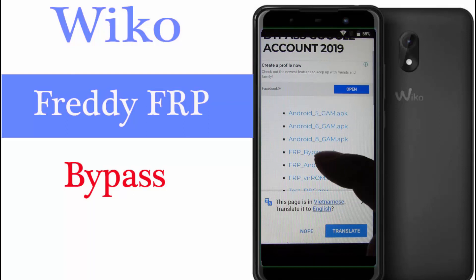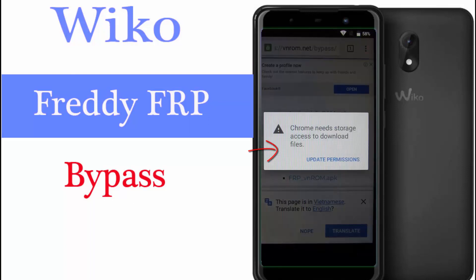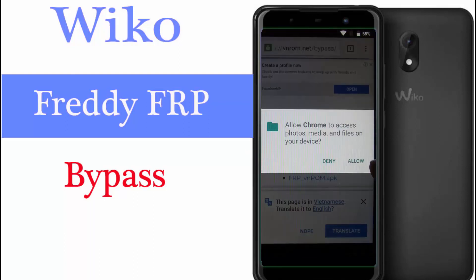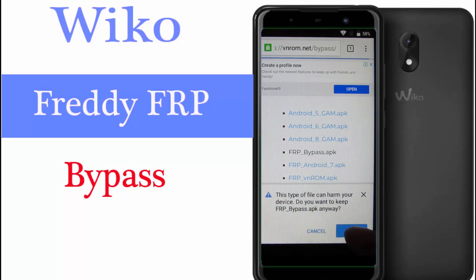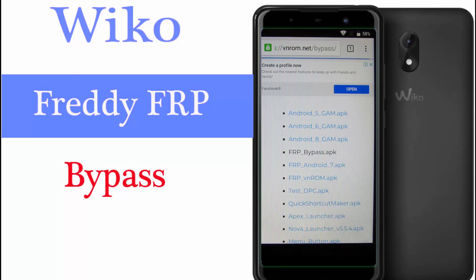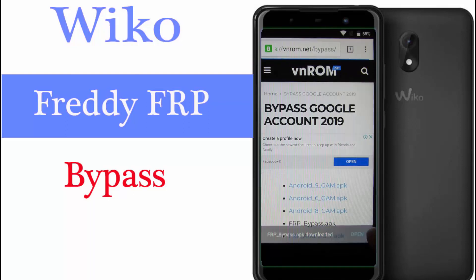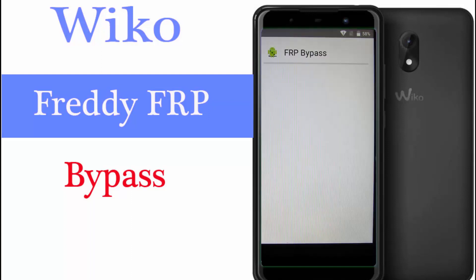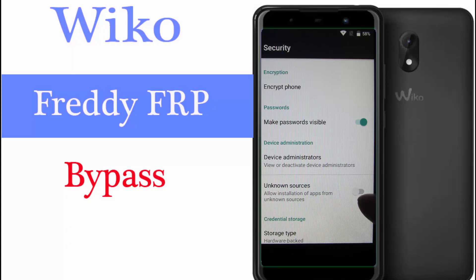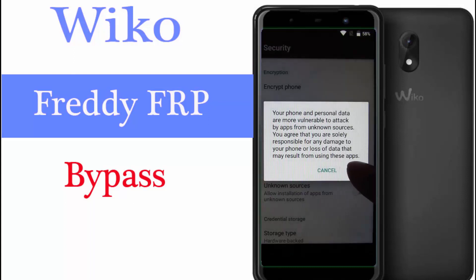Scroll down a little and download frpbypass.apk. Then choose 'Update permission' and press allow, then close it. Press allow again, and it will start downloading. Now choose open — there is the file, 1.17 MB. Press settings, scroll down, choose 'Unknown sources', allow, then press OK.